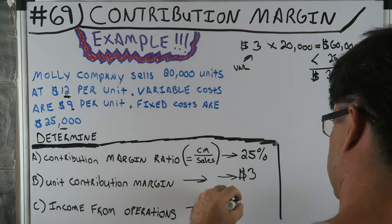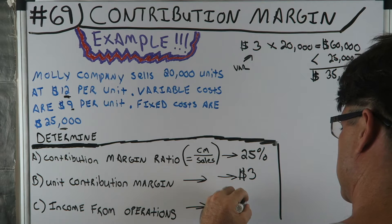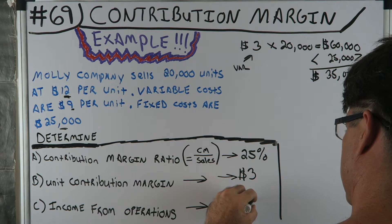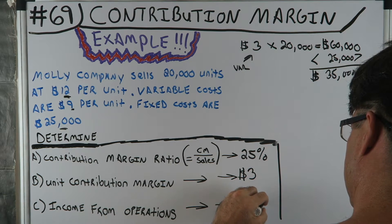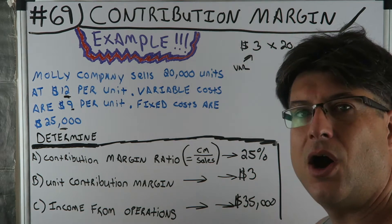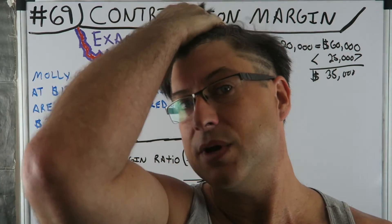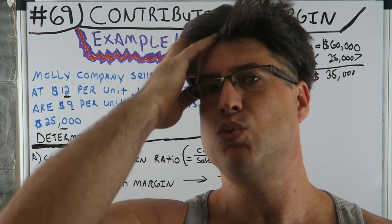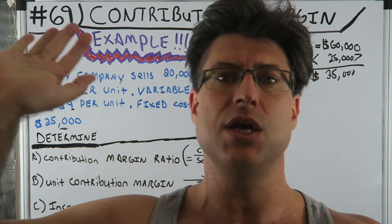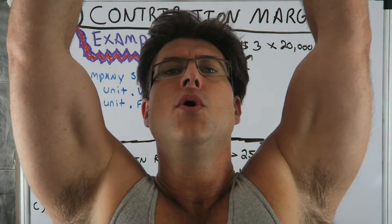$60,000 minus $25,000 equals $35,000 profit. That's the income from operations.